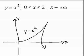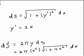In our next example, we look at the function y equals x squared on the interval x going from 0 to 2, and we revolve once again about the x-axis. The element of arc length is the square root of 1 plus y prime squared dx. Since y prime is 2x, the derivative of x squared, ds becomes the square root of 1 plus 4x squared dx.